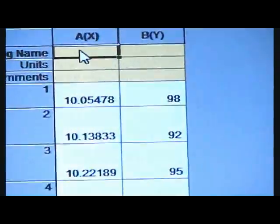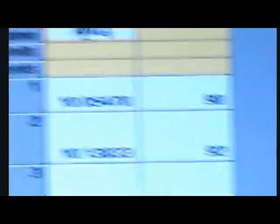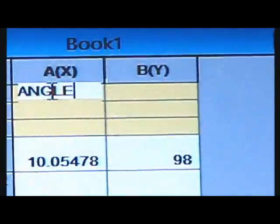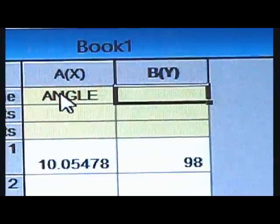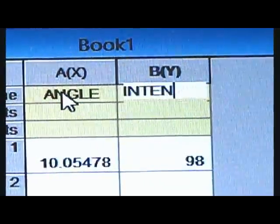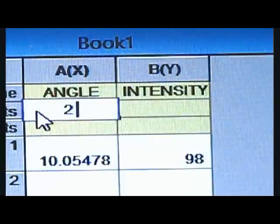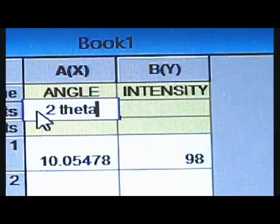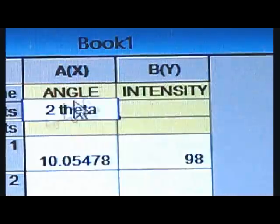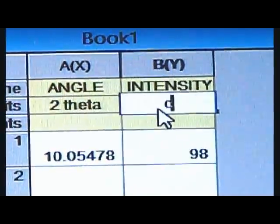Now we get only the angle and intensity values. Now we have to write the long name as angle and the Y as intensity. The unit of angle is in 2 theta and that of intensity in counts.